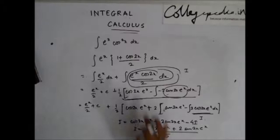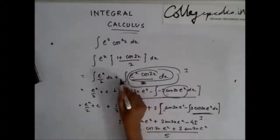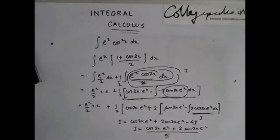So the value of this integral, that is e to the power x cos 2x, this half I will take outside, is this.